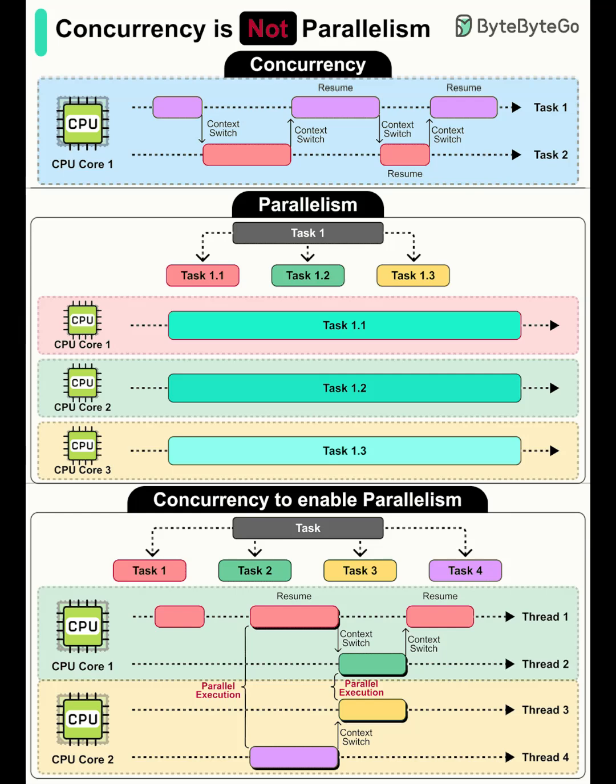Parallelism is true simultaneous execution. Multiple tasks run at the same time on multiple CPU cores or processors. If you split a large job into independent chunks and run those chunks side by side, you're doing parallel computing. This model excels at heavy computations, data processing, scientific simulations, image and video rendering, analytics pipelines — anything you can divide into pieces that don't need to wait on each other constantly.